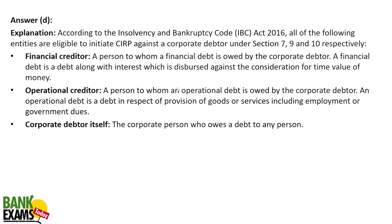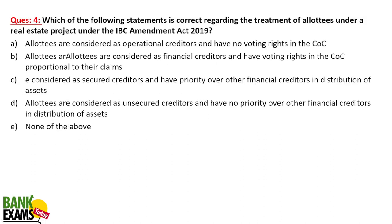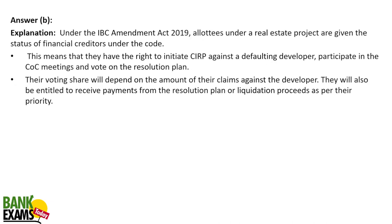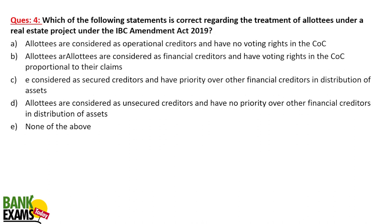Which of the following statements is correct regarding the treatment of allottees under a real estate project under IBC Amendment Act 2019? In 2019 an amendment was made — regarding how allottees of a real estate project are treated in case of insolvency procedures. Allottees are treated as financial creditors and have voting rights in the creditors' committee. So option B is correct.